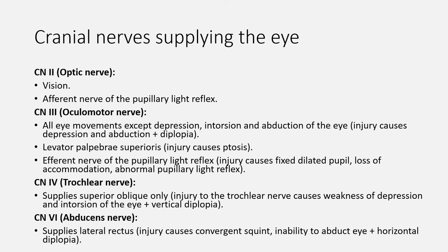Cranial nerve 6 is the abducens nerve, and from its name, it is responsible for abduction of the eye because it supplies the lateral rectus muscle. Injury to the abducens nerve causes convergent squint at rest with inability to abduct the eye. The injury of the abducens nerve also causes horizontal diplopia — it is important to remember that abducens nerve injury causes horizontal diplopia.